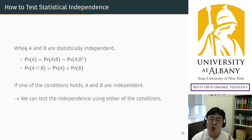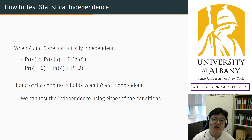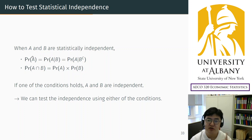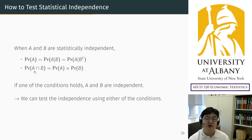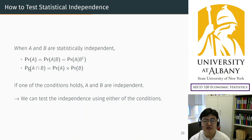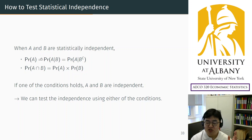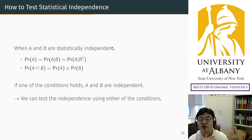If A and B are statistically independent, the first property is that the probability of one event is not affected by the other event. Another property is the special multiplication rule. So mathematically, if we test whether those equalities hold or not by checking them, we can conclude whether two events are independent or not.